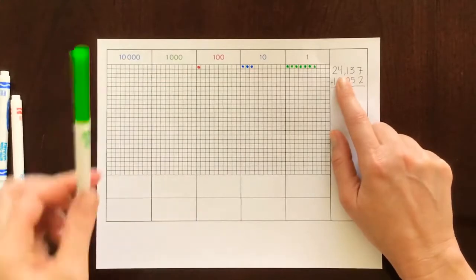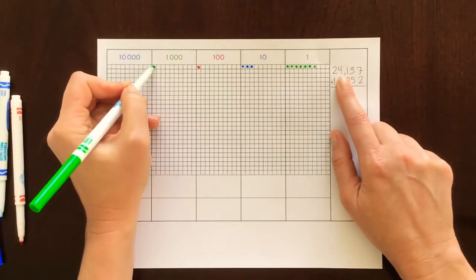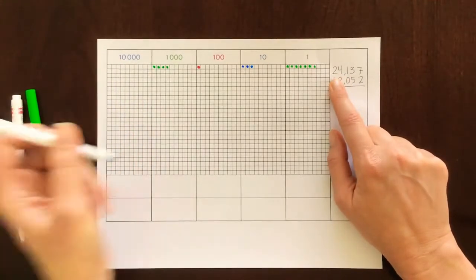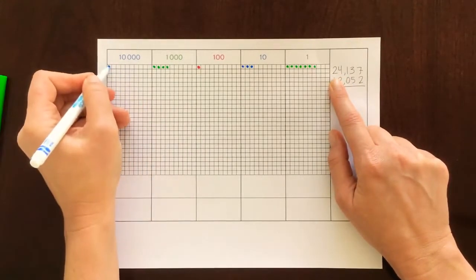To the thousands place we have four. One, two, three, four. And the ten thousands we have two. One, two.